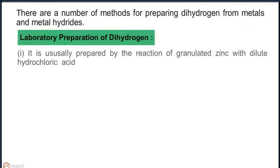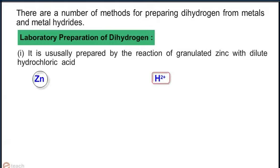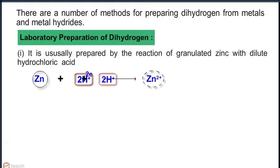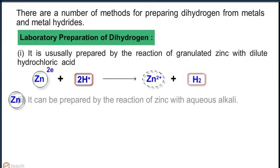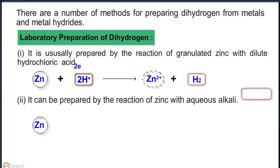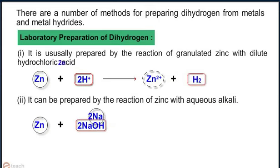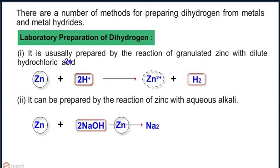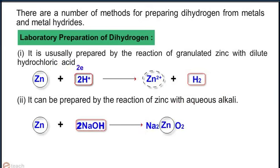Method 1: It is usually prepared by the reaction of granulated zinc with dilute hydrochloric acid. Method 2: It can also be prepared by the reaction of zinc with aqueous alkali.